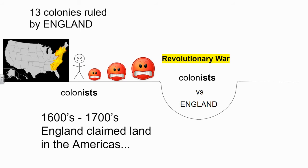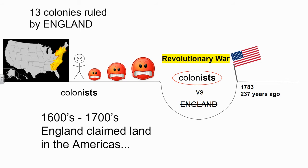The colonists get angrier and angrier until they feel they have no choice but to declare war on England — that is the Revolutionary War. Now England should totally win easily, because during this time England had the strongest army in the world and the colonists didn't even have an army. But somehow England will lose and the colonists will win. England will lose their 13 colonies, which means in 1783 those 13 colonies are no longer ruled by England, so we can't call them colonies anymore. They are free to become their own country, call themselves 13 states, and name their new nation the United States of America.